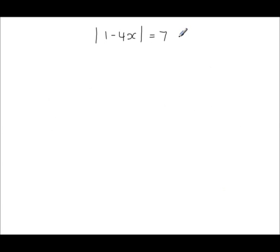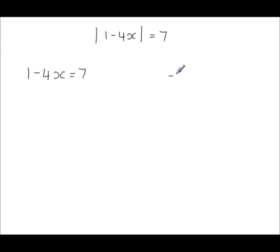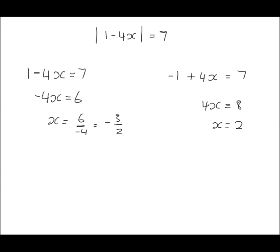Here's another problem: the modulus of 1 minus 4x is equal to 7. Writing the equation as it is without the modulus, and then changing the signs on one side and solving, gives two solutions.